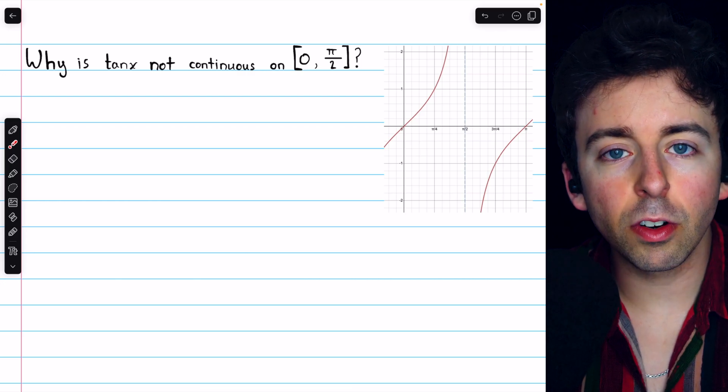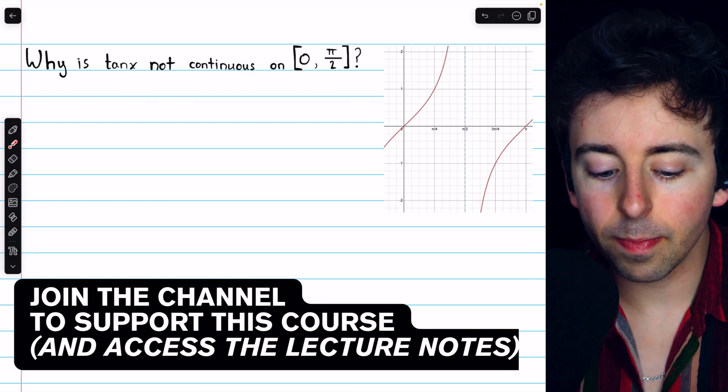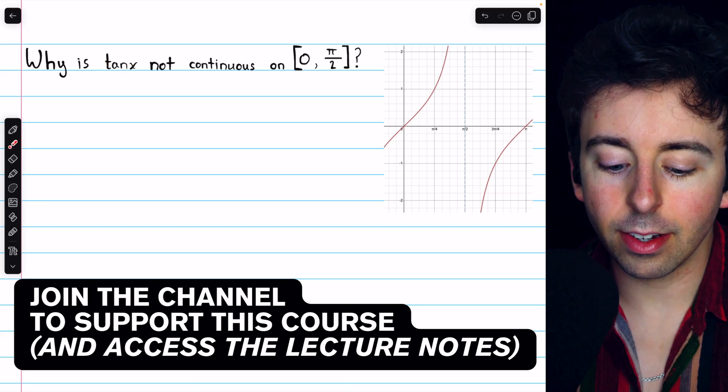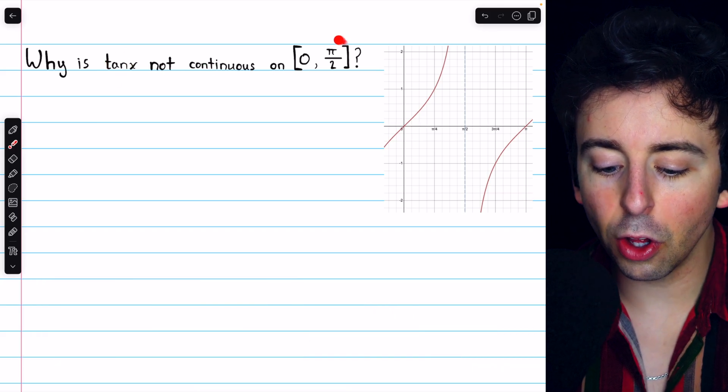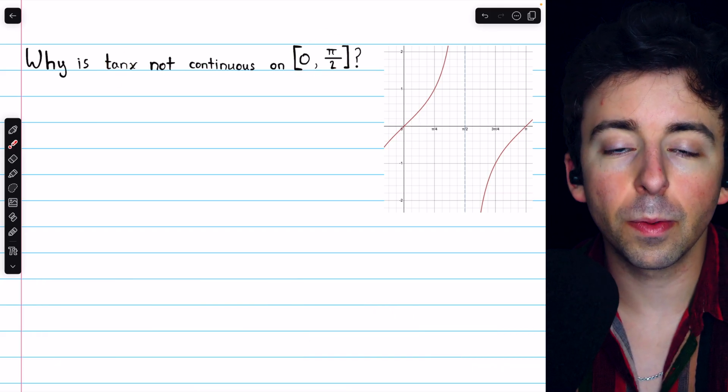Here's a basic question about the tangent function and continuity. Why is tan x not continuous on the closed interval from 0 to pi over 2?